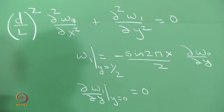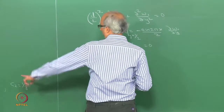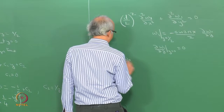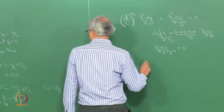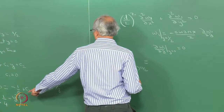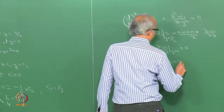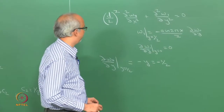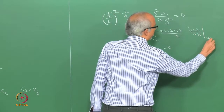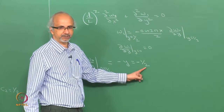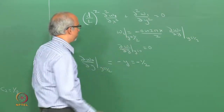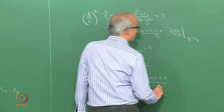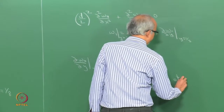I need to calculate dw0/dy at y equals half. dw0/dy is minus y, so at y equals half it is minus 1/2. Substituting this, the boundary condition reduces to w1 equals sin(2πx)/4 at y equals half.